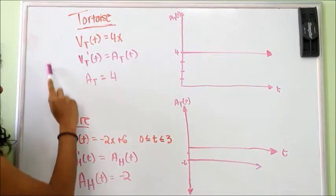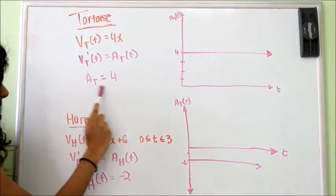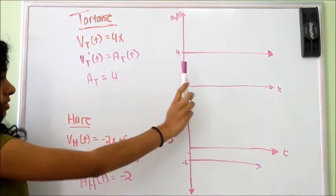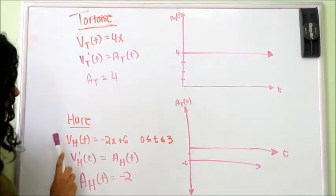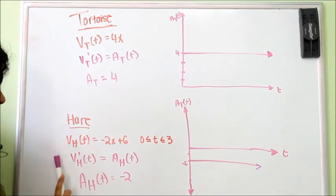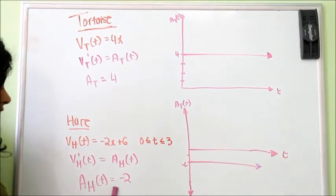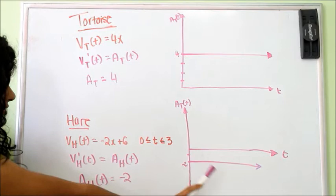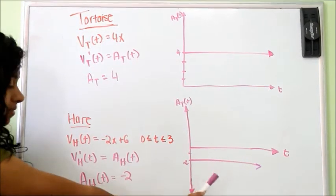We took the velocity function and derived it to get the acceleration. So the tortoise's acceleration is increasing at a constant rate of 4. The hare's velocity function, we derived it to get the acceleration, and so its acceleration is decreasing at a constant rate of -2.